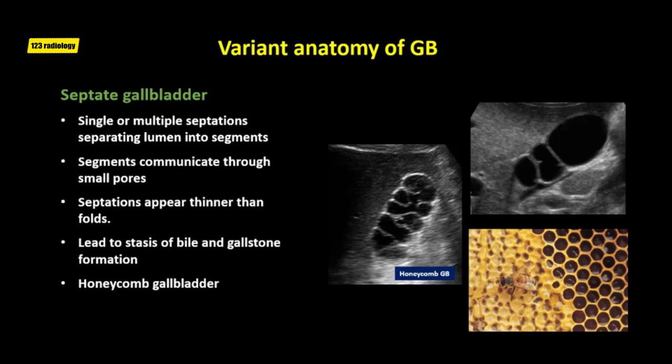Septate gallbladder is a congenital variant where there may be single or multiple septations separating the gallbladder lumen into segments, which communicate through small pores. Septations are rare and generally appear thinner than folds, and lead to stasis of bile and gallstone formation. On ultrasound, multiple communicating septations and locules are seen bridging the gallbladder lumen. The term 'honeycomb gallbladder' describes the sonographic appearance of a multiseptate gallbladder.